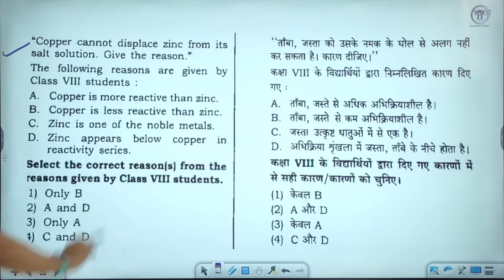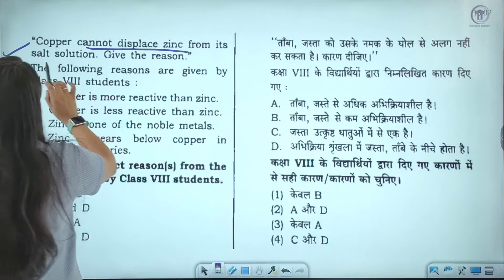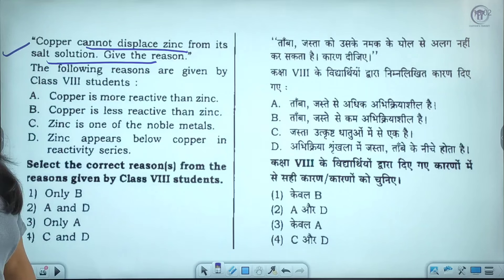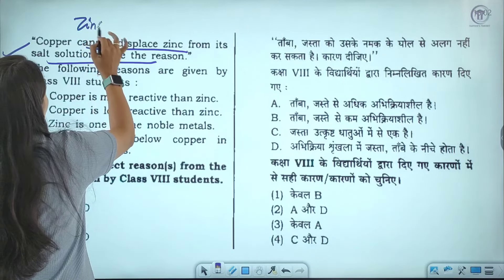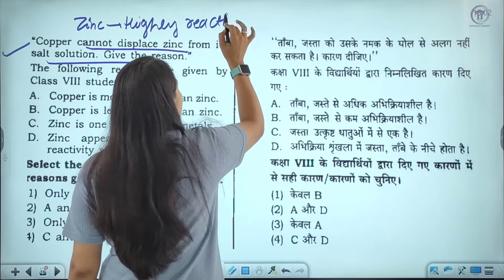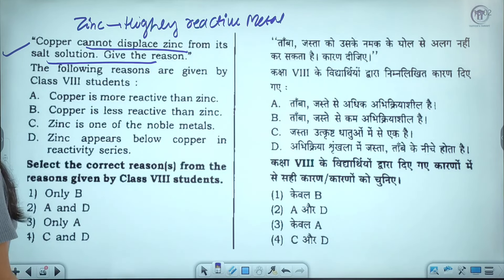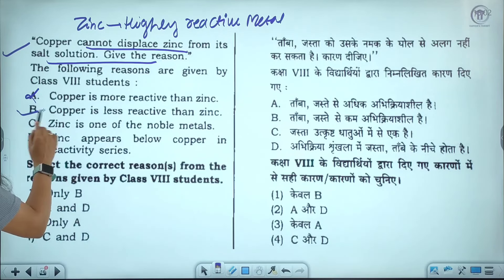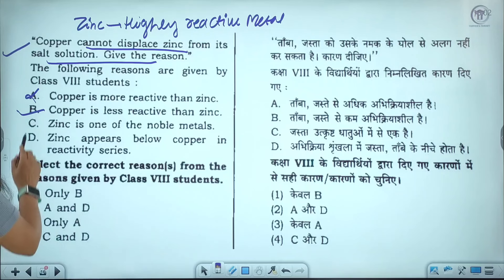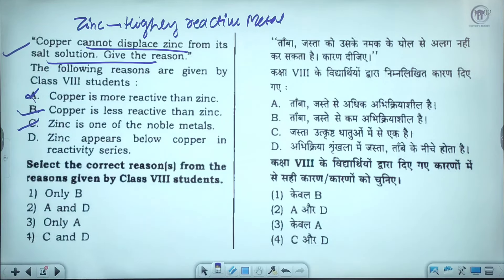Question nine: copper cannot displace zinc from its solution. The reason is that zinc is a highly reactive metal and copper is less reactive. The correct answer is: zinc appears above copper in the reactivity series, meaning zinc is more reactive than copper, so copper cannot displace zinc.